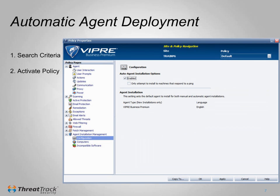Second, the search must be activated at the policy level. Simply check the Enabled checkbox, and specify if you wish to only install to machines that reply to a ping request. This can speed up the process, but could skip machines that don't reply to a ping.